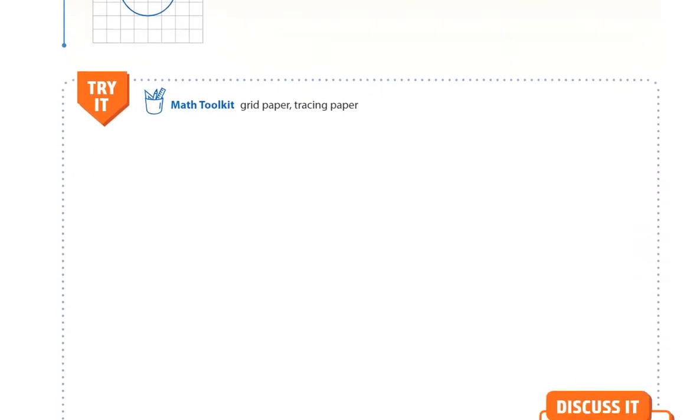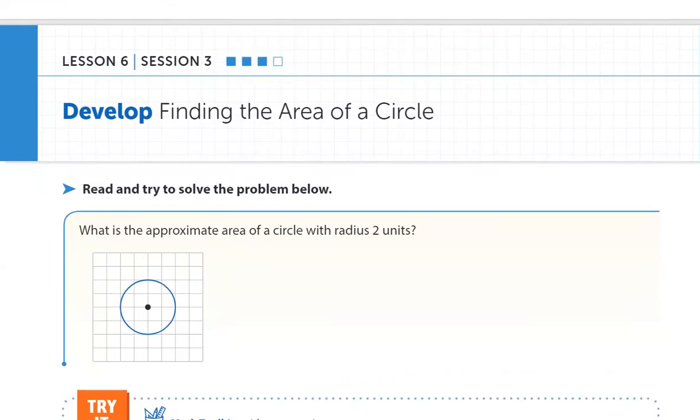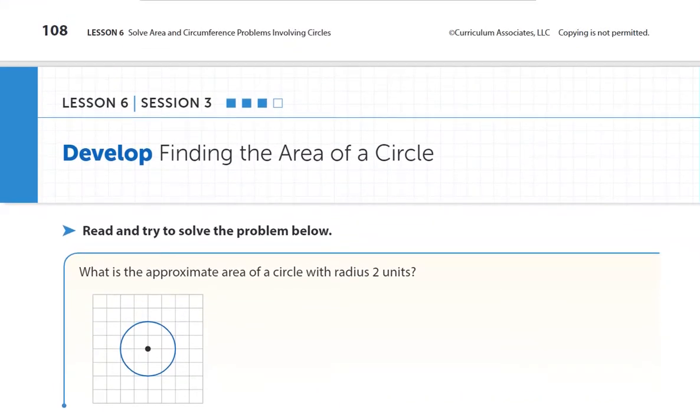Welcome 7th graders to Lesson 6.3 which is on page 109. Yesterday we found the circumference of a circle. Today we are finding the area of a circle instead.